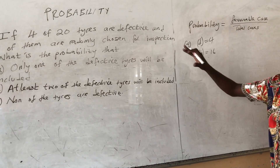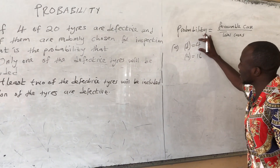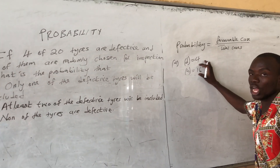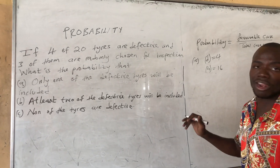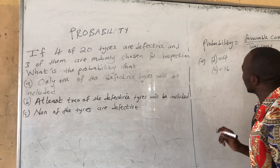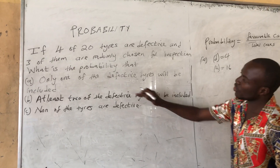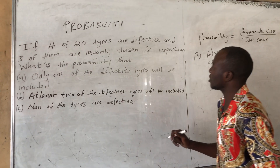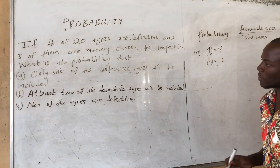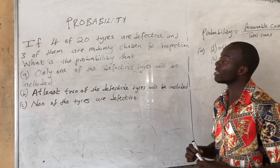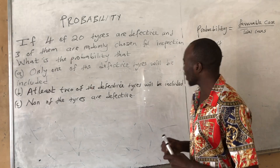When we add, we should get the total number of tires. So 4 are defective, 16 are good, and 3 are randomly chosen. So we have 3 which are being chosen. What is the chance that among those 3 chosen, only 1 will be defective?